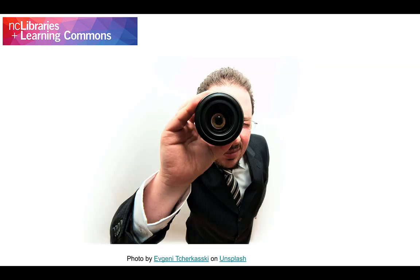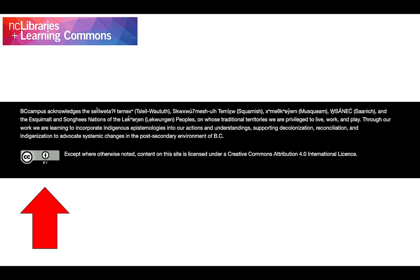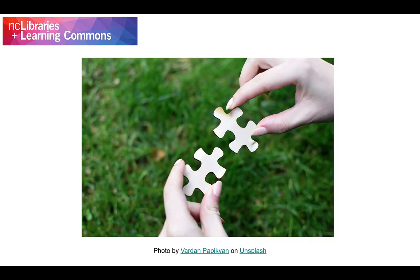You can identify OER resources in the Creative Commons by looking for the license and its allowable uses. These licenses can be found next to the author info or in the About or Terms of Use section of a website. If you have problems determining if a resource has a Creative Commons license, or if you are unsure of what that license allows you to do, please do not hesitate to contact NC Libraries for assistance.